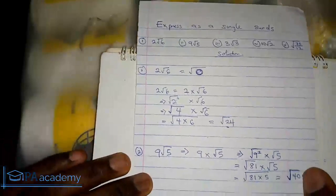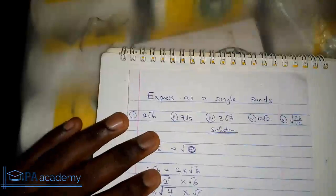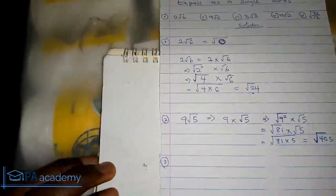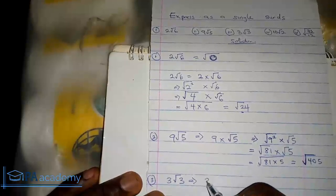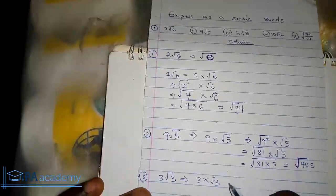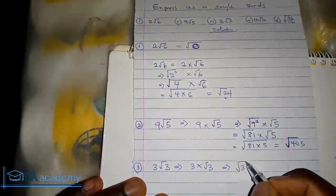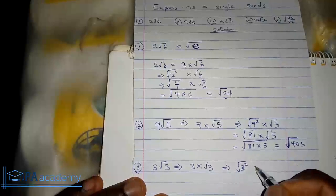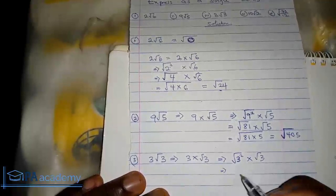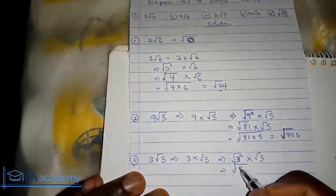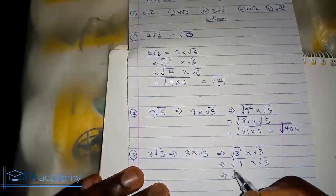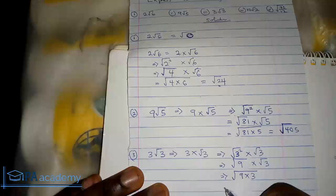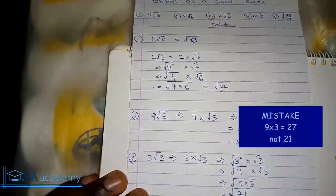For Example 3, we have 3√3. We break it apart as 3 times √3. We rewrite the 3 in front as √(3²), so that gives us √9 times √3. That would give us √(9×3), which equals √27. So 3√3 as a single surd is equal to √27.